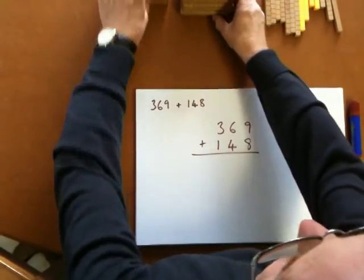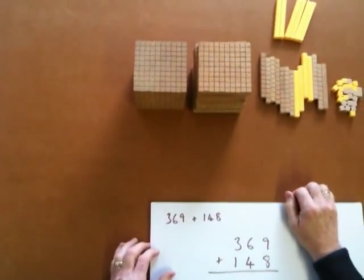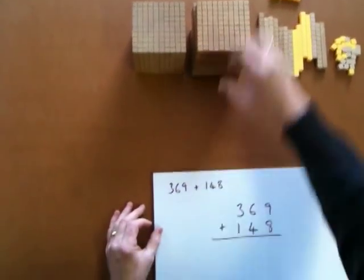Basically we're using this equipment, which is sometimes called base 10 equipment, and we're going to get each number using the equipment.